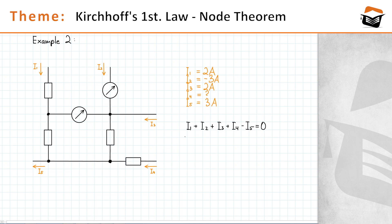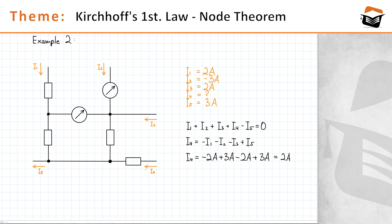If we rearrange this equation to solve for i4, we get: i4 equals minus i1 minus i2 minus i3 plus i5. Now let's plug in the values. We get i4 equals minus 2 amps, and since i2 is minus 3 amps, minus minus 3 amps gives us plus 3 amps. The sum of these currents is equal to 2 amps, so the current i4 that flows into the circuit is equal to 2 amps.